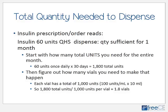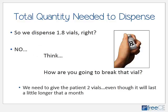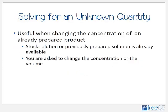Each vial contains 1000 units (100 units per mL times 10 mL). If we need 1800 total units and there are 1000 units per vial, we need 1.8 vials. But we can't break a vial — so we give the patient 2 vials, even if it lasts a little longer than a month.